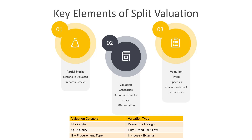SAP provides a few standard valuation categories: H is for origin, Q is for quality, and B is for procurement type. We can also create our own valuation categories. A valuation category is a one-character ID and we can use any character on the keyboard to create one. Each valuation category is associated with valuation types, which specify the individual characteristics of the partial stock. For example, if we create a valuation category for origin, we can have valuation types for domestic and foreign, representing materials sourced from within the country or outside of it.